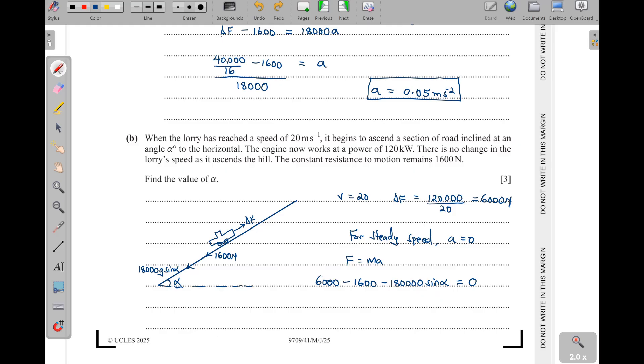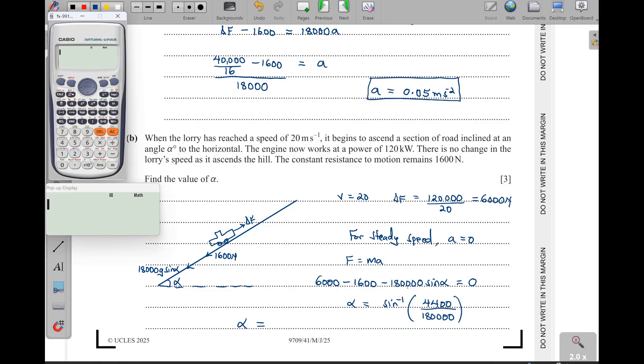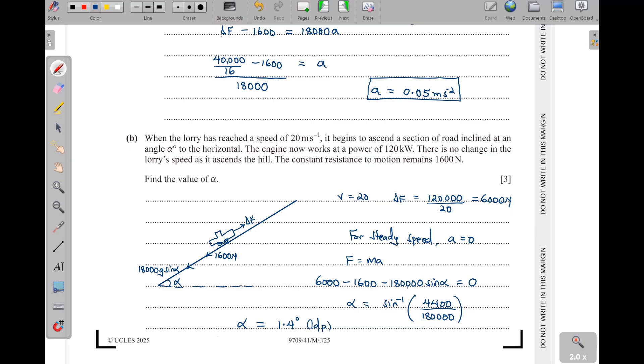When I take this one to this side, it becomes a positive. Acceleration is zero, so when it multiplies with the M, we get zero. Now 6,000 minus 1,600, that one will give us 4,400. So that means alpha is going to be equal to the arc sine of 4,400 divided by 180,000. After we take the arc sine, the calculator has to be in degrees here. So shift, then sine, we have 4,400, then we divide by 18,000, and this one will give us 1.402, or I can just take it as 1.4 to one decimal place, 1.4 degrees to one decimal place.